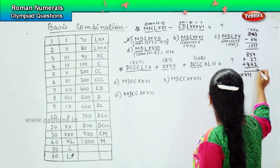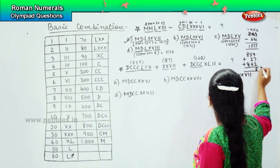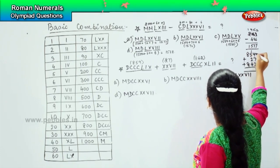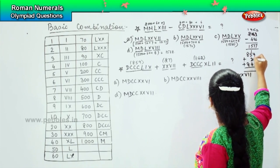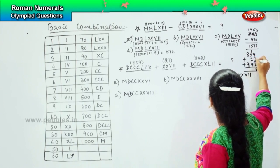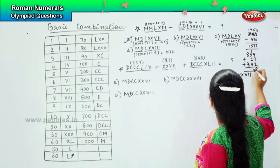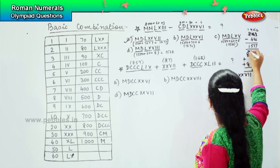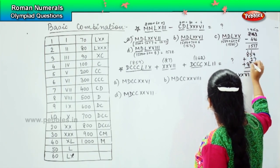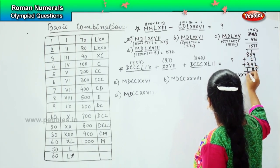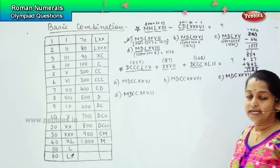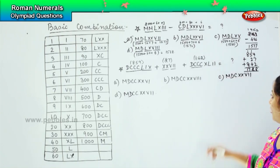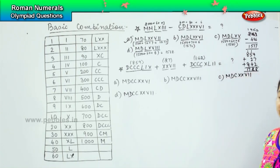9 plus 7 is 16, plus 2 is 18 — carry forward 1. 1 plus 5 is 6, 6 plus 2 is 8. 8 plus 4 is 12. 1 plus 8 is 9, 9 plus 8 is 17. So I should get an answer of 1728.